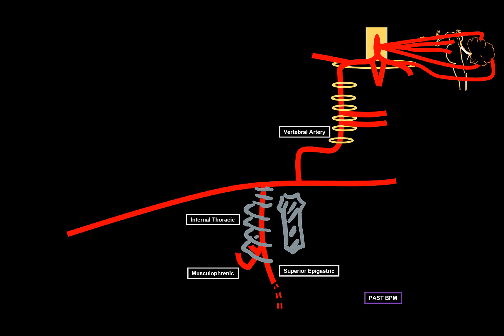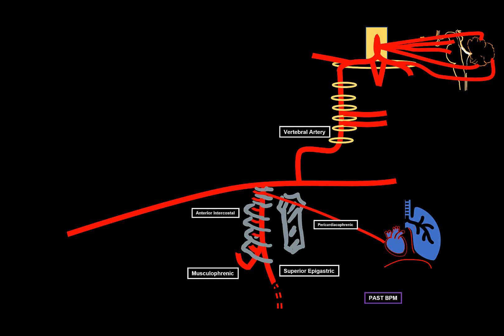For the side branches of the internal thoracic, use the mnemonic PAST BPM — beats per minute. P stands for pericardiophrenic, supplying the pericardium, diaphragm, and mediastinal part of the pleura. A is for anterior intercostal arteries of the upper 5–6 intercostal spaces, which communicate with the posterior intercostal arteries of the thoracic aorta. S for sternal, T for thymic, B for bronchial artery (for the lower part of the bronchus), P for perforating artery (supplying the mammary glands in females), and M for mediastinal part. That's all for the internal thoracic.